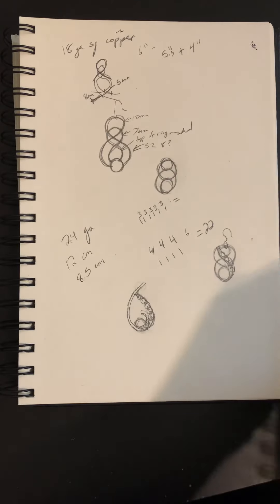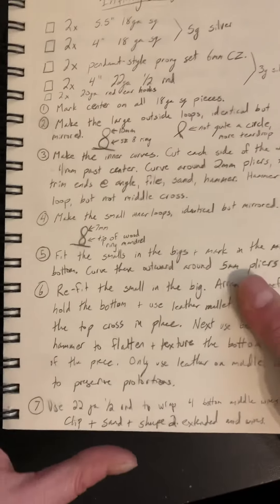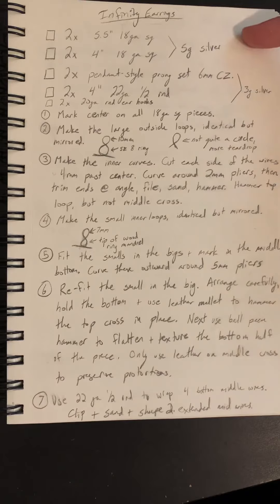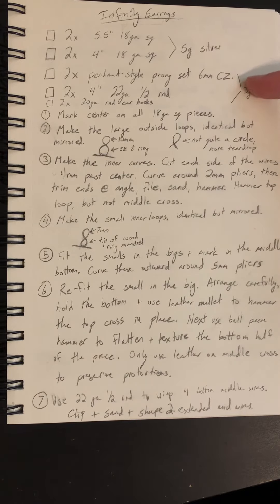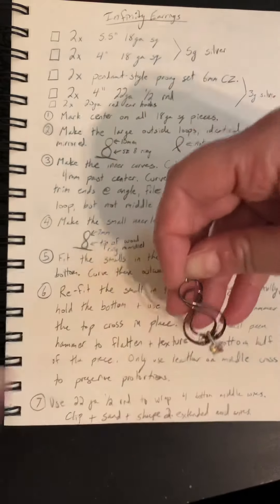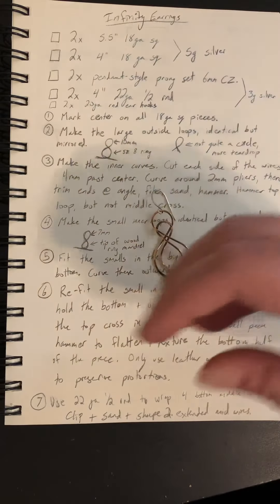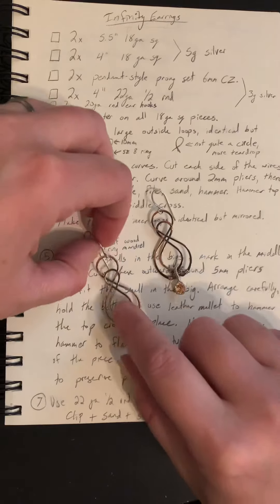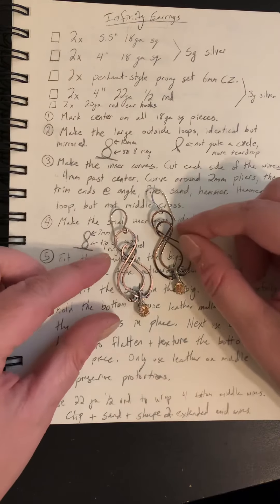So then I start writing down the steps as I make the final prototype and I write down exactly what I did and in what order because a lot of times the order of the steps really matters. And this is the final copper prototype of this new earring design in copper with champagne cubic zirconia set in sterling silver at the bottom.